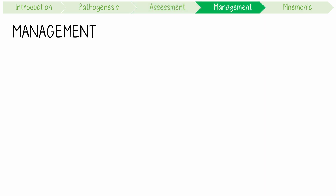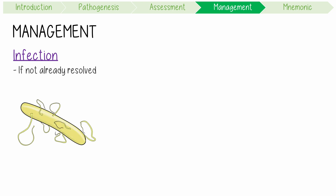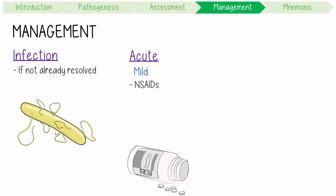Moving on to management — treating the precipitating infection may be warranted if it's not already resolved. However, there is limited evidence that this improves remission rates for the actual reactive arthritis. Management of the acute arthropathy depends on severity. Mild disease may only require NSAIDs like aspirin, but severe disease might require corticosteroids like prednisone and intra-articular corticosteroid injections.